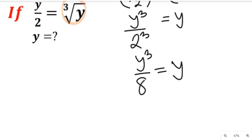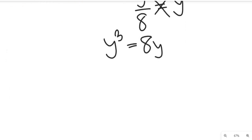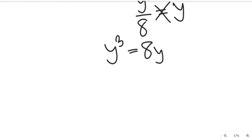Now what we need to do is to cross multiply. And once we cross multiply, we'll have y³ equal to 8y. Now you will see that the result to that question is gradually coming out.